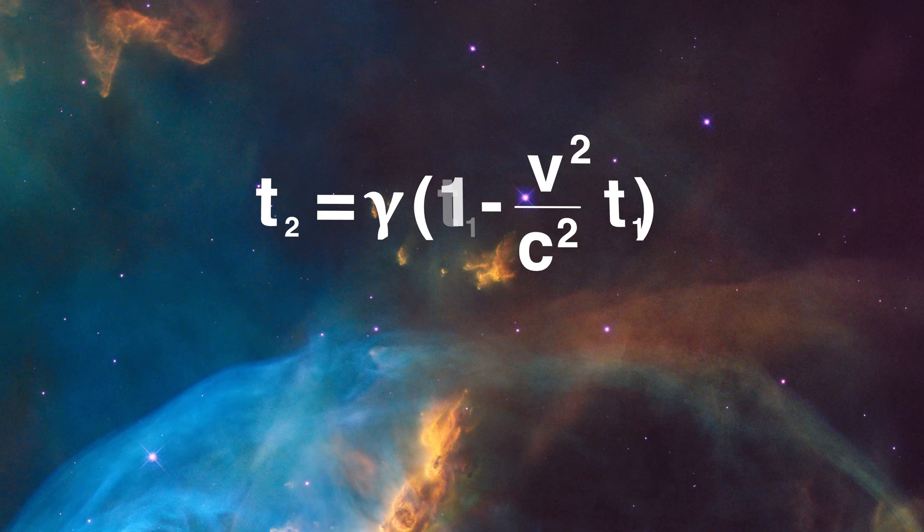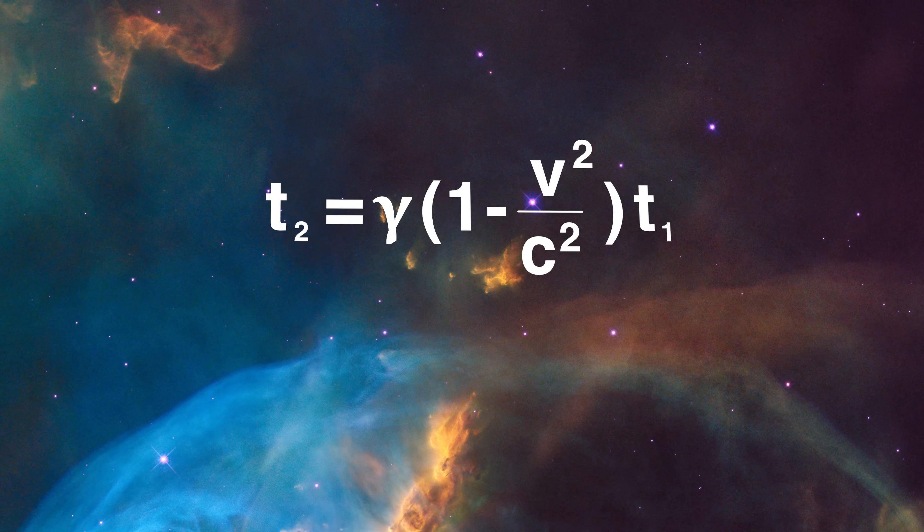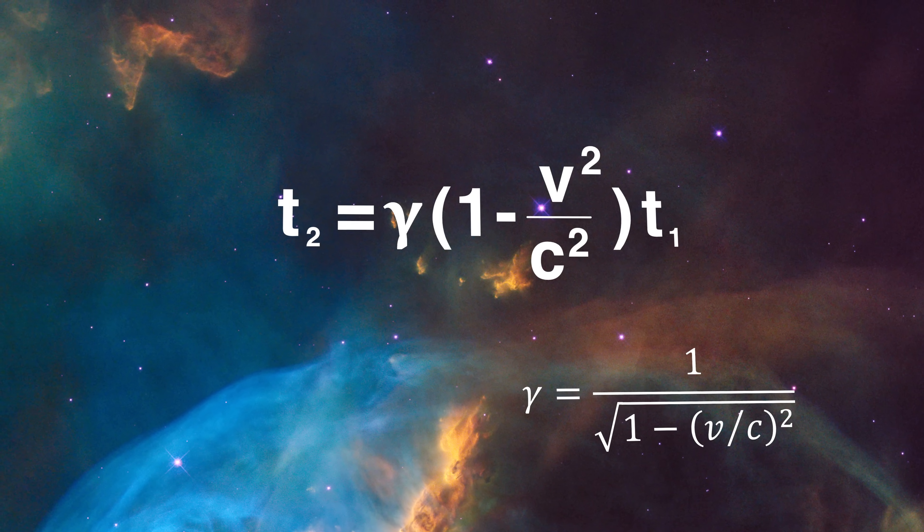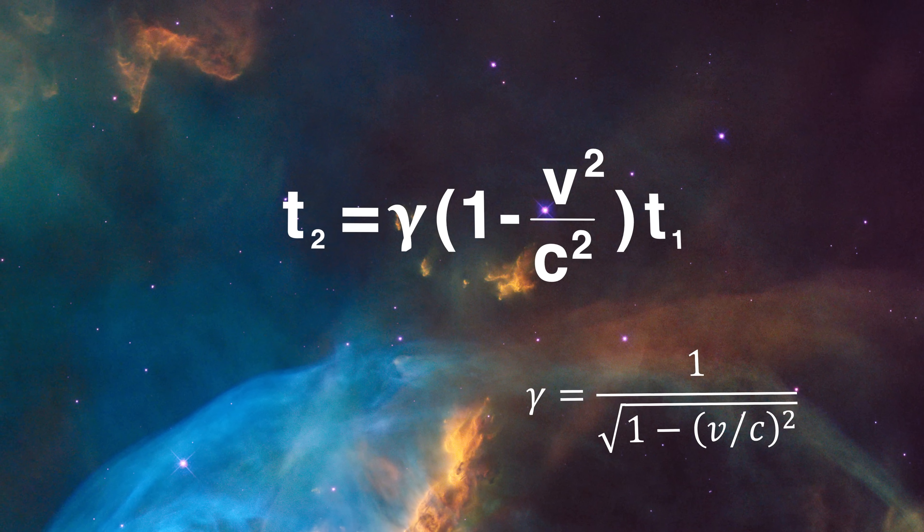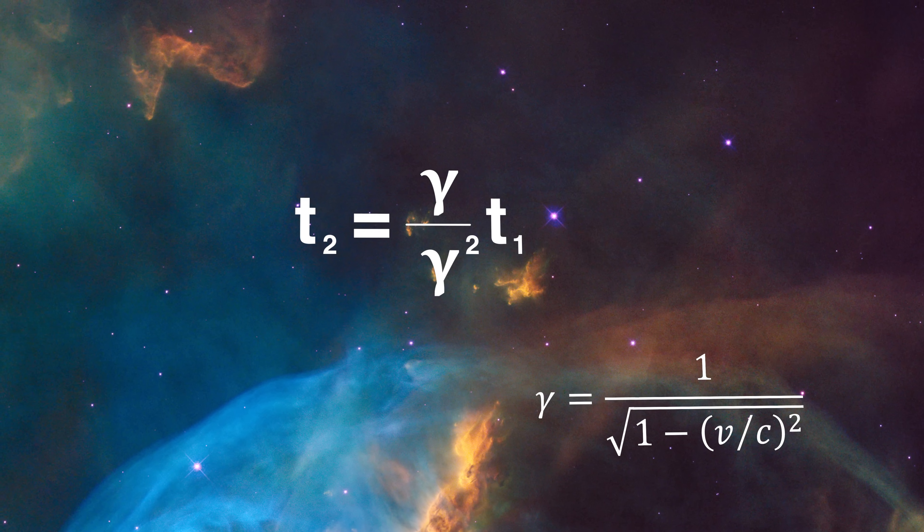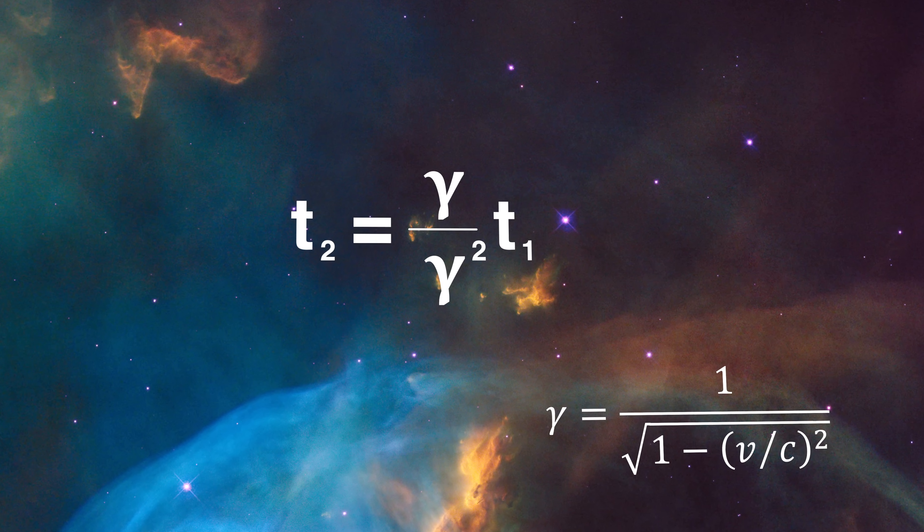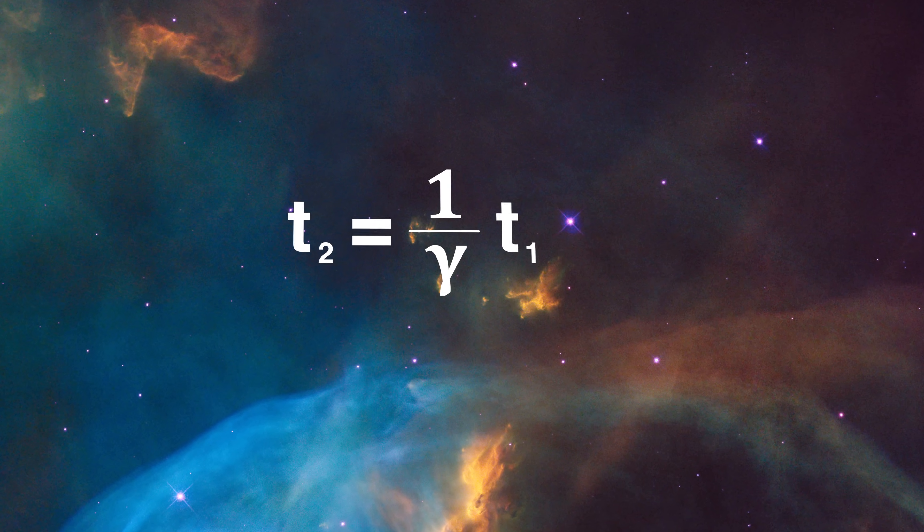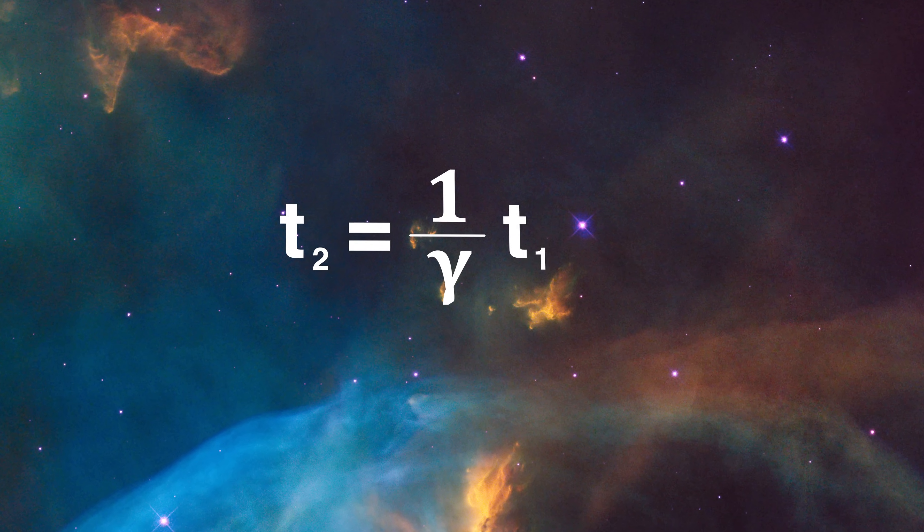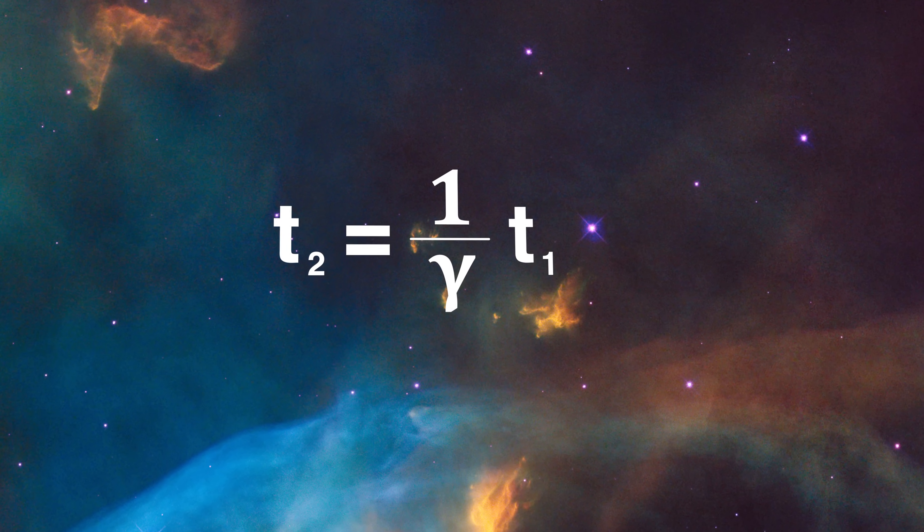We can factor out the t sub 1 and get this equation here. And at this point, we can use the definition of gamma, which I remind you is 1 over the square root of the quantity 1 minus v squared over c squared. That means that this equation can be written as t sub 2 equals gamma divided by gamma squared times t sub 1. And finally, we get t sub 2 equals t sub 1 divided by gamma. That's divided, not multiplied by. That's exactly the opposite thing we saw when we looked at what was happening at Observer 1's location.